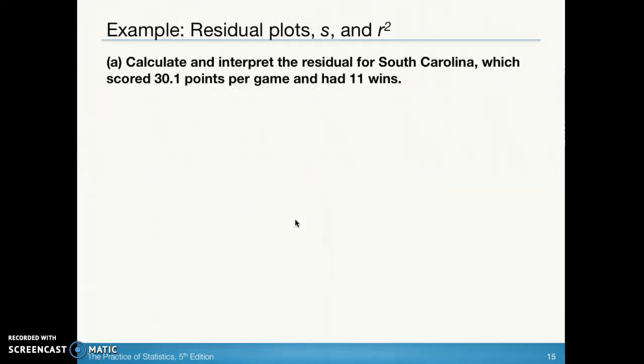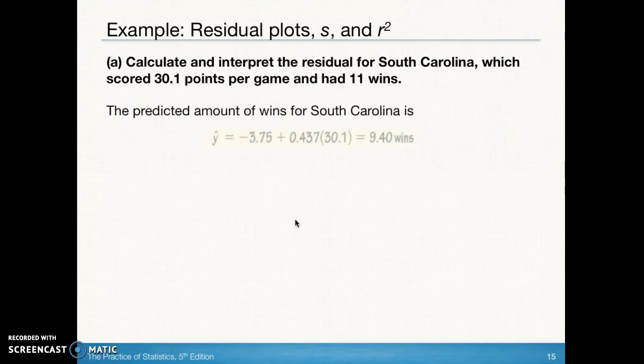Our first order of business is to calculate and interpret the residual for South Carolina which scored 30.1 points per game and had 11 wins. Remember we're trying to predict the number of wins, so that 11 is going to be our y value, what actually happened when they had 30.1 points per game. We're going to use the prediction line, plug in the 30.1 points per game. That's going to give us our y hat or our predicted value of y. When we plug in, it's 9.40 wins.